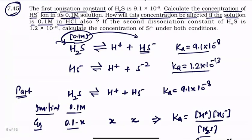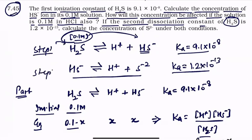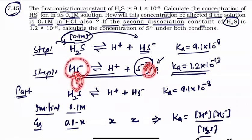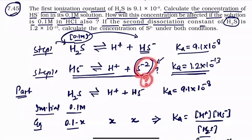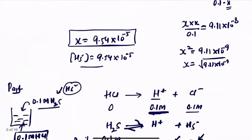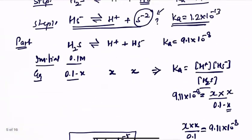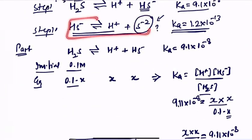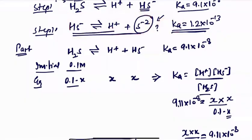Now for the third part: the second dissociation constant of H₂S is given. This is step 2 of the equilibrium, which also has a dissociation constant Ka₂ = 1.2 × 10⁻¹³. To find the sulfide ion concentration, you need HS⁻ concentration, which appears in both step 1 and step 2 — so this can be confusing. The easy way is to use the overall equilibrium reaction.